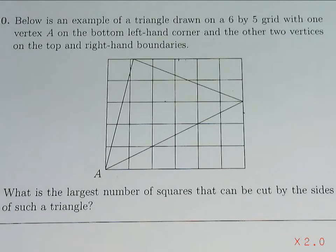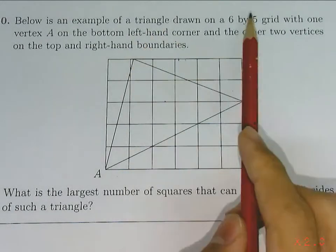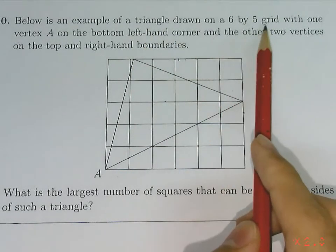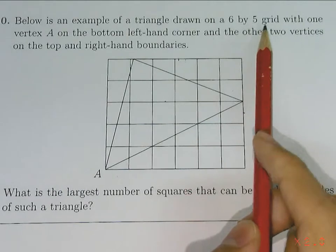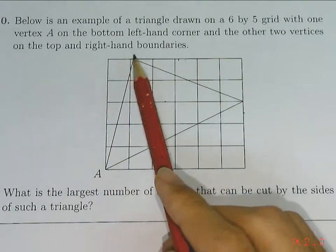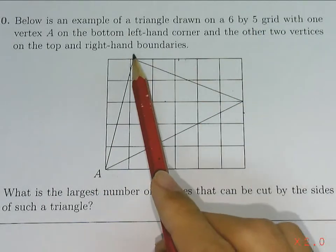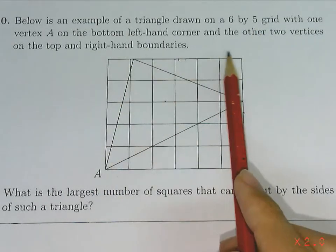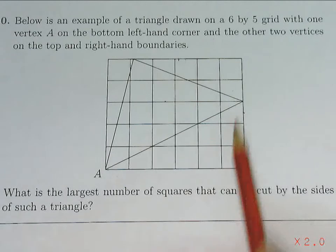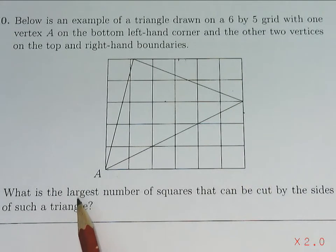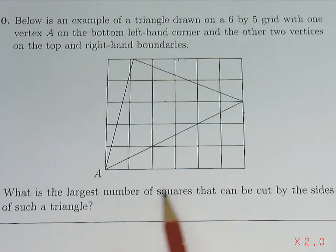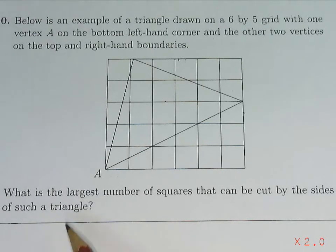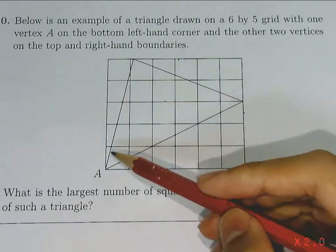This question describes a triangle drawn on a 6x5 grid with one vertex on A and the other two on the top and the right-hand boundary. The question is asking: what is the largest number of squares that can be cut by the sides of the triangle?